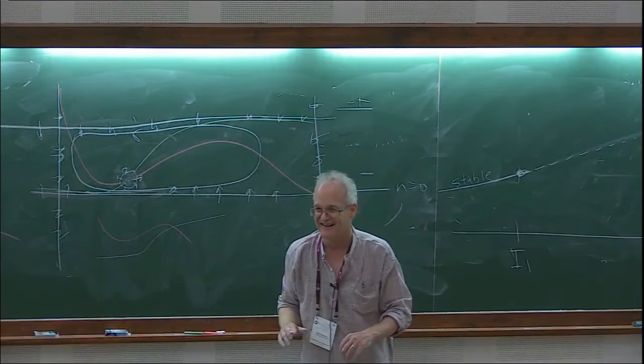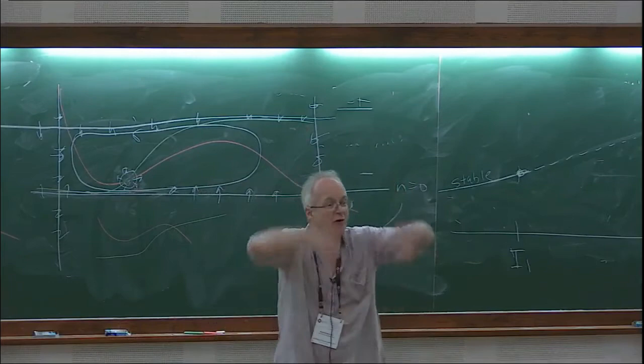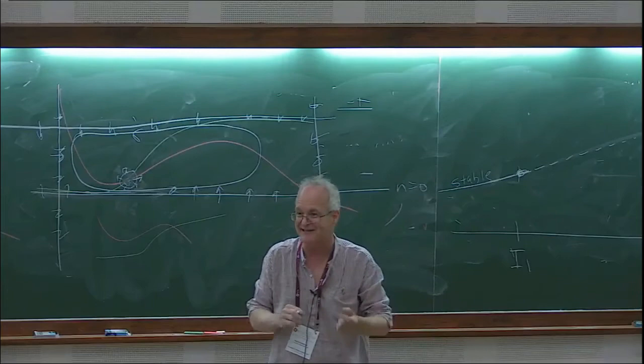So we know: if we inject enough current to destabilize the equilibrium point, then the neuron has to fire repetitively. The action potential looks like this — it's a limit cycle. Voltage zips around the limit cycle, generating periodic action potentials.